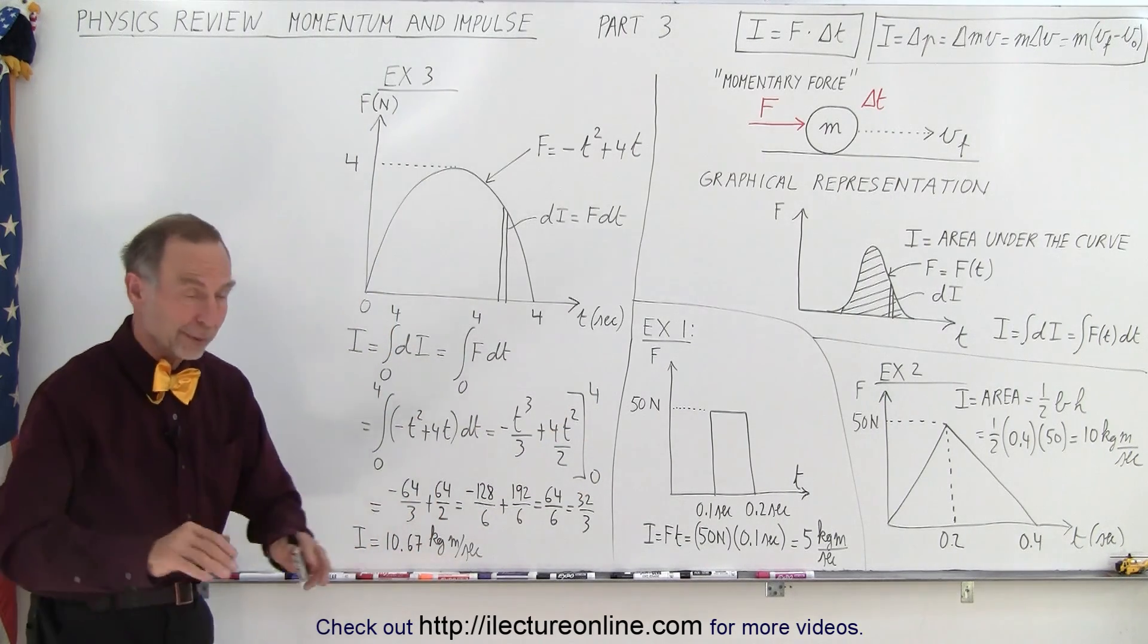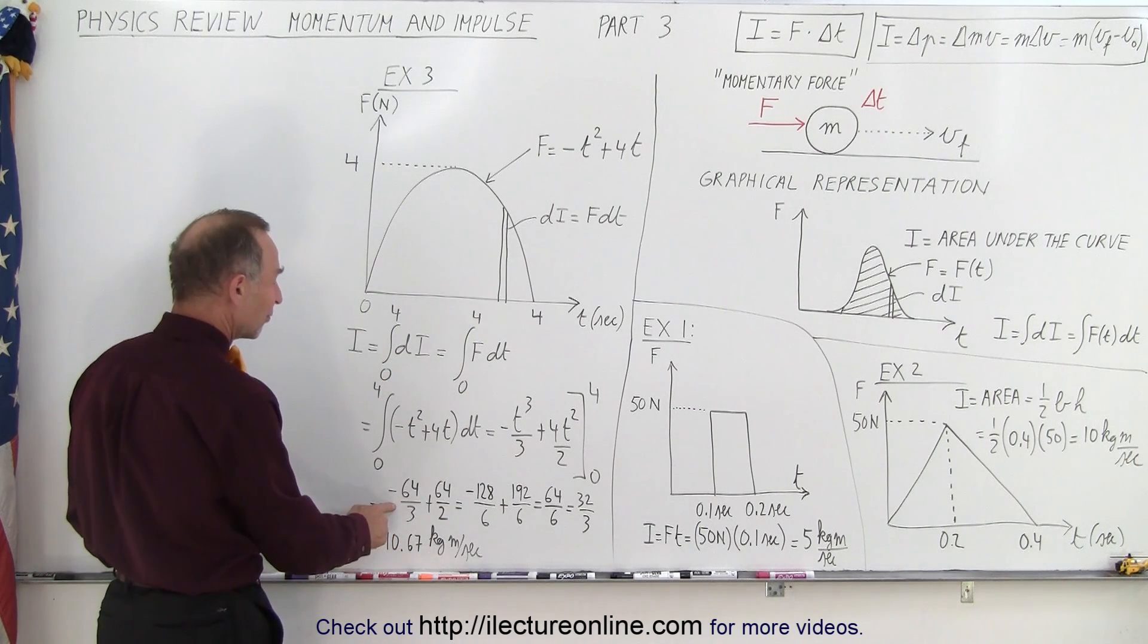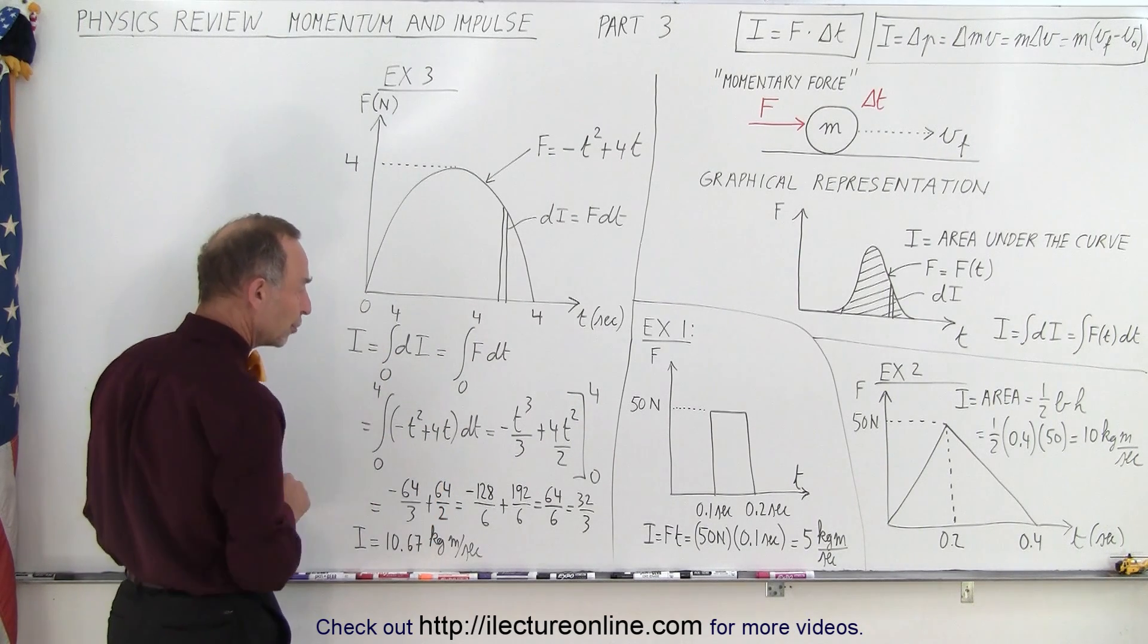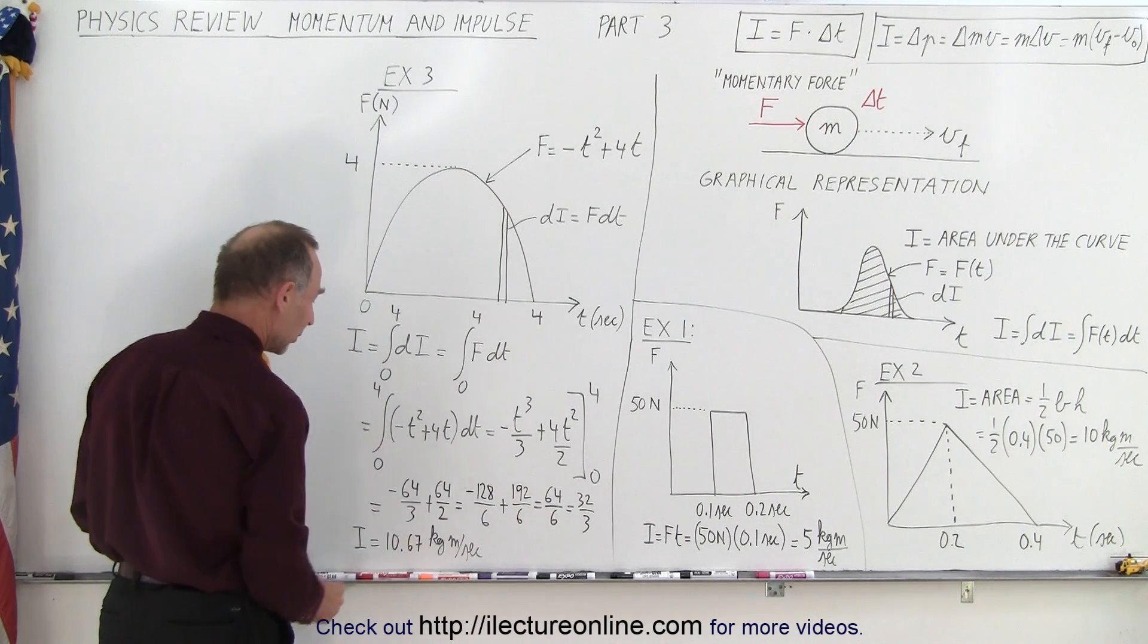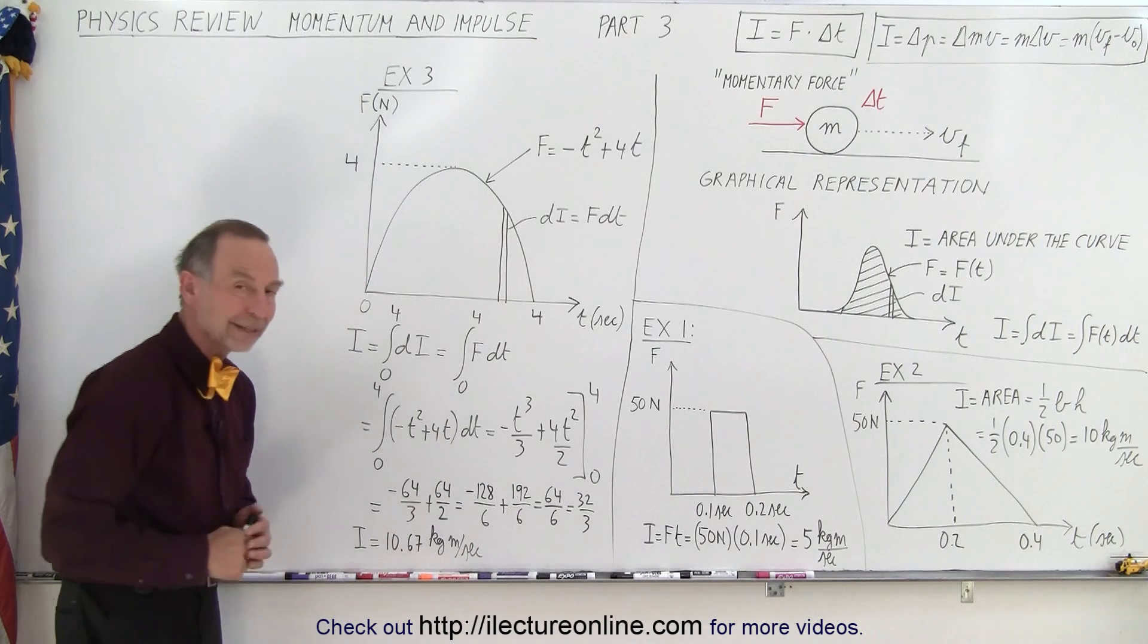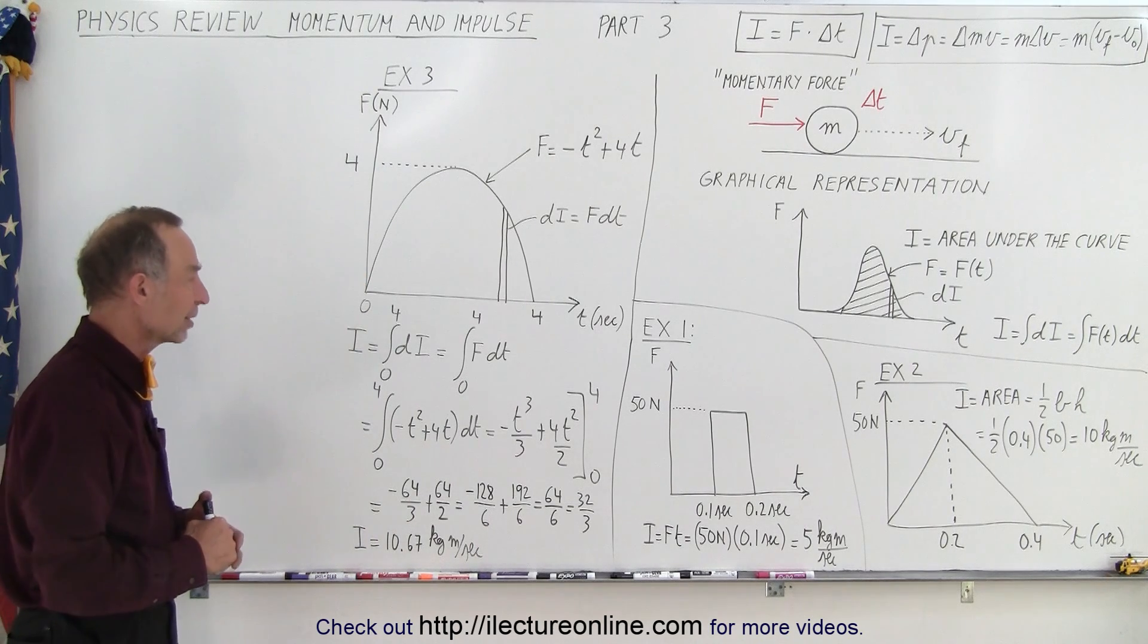Of course, when we plug in the lower limit, we get nothing. Plug in the upper limit, we get minus 64 over 3 plus 64 over 2. And when we then do the arithmetic, we end up with 32 over 3, or 10.67 kilogram meters per second for the impulse.